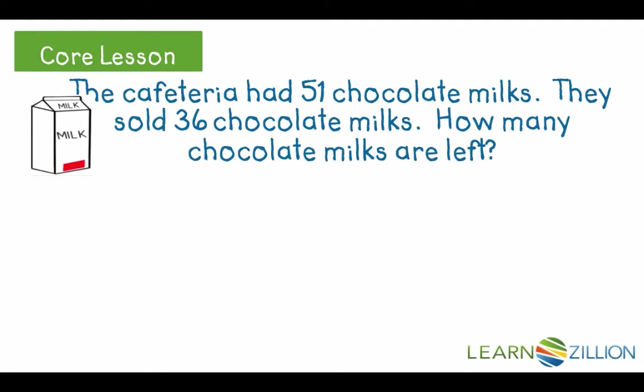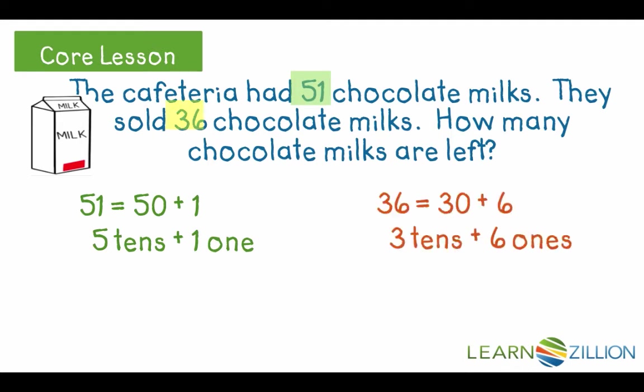Again, we can break the numbers apart. 51 is 50 plus 1, or 5 tens and 1 one. 36 is 30 plus 6, or 3 tens and 6 ones. Some milks are going away, so this is also a subtraction problem. 5 tens minus 3 tens is 2 tens. If we look at the ones, we have 1 one minus 6 ones. But that's a problem. I don't have enough to give 6 ones away.